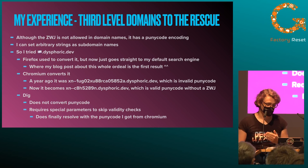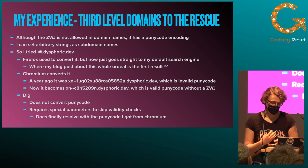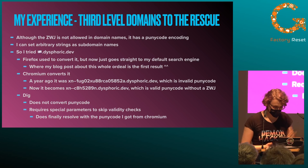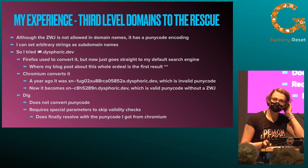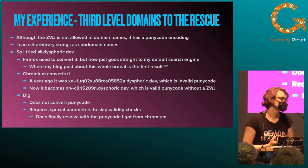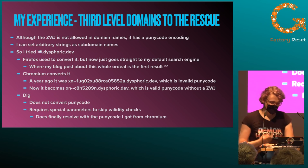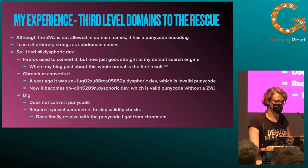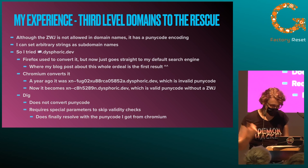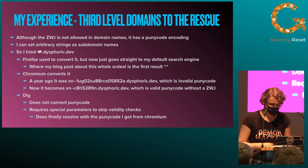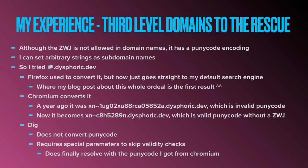The zero-width joiner was not allowed in domain names, but it has a punycode encoding, at least depending on which encoder you use. I can set arbitrary strings as subdomain names, so I tried setting one. Firefox did convert it back then and it worked, but now it just goes straight to the default search engine without even trying. Chromium does convert it — a year ago it was one unreadable string, now it's another. The first wasn't valid punycode; I don't know how that happened, but they fixed it. I tried dig, a DNS command-line tool — it doesn't convert punycode so I had to do it myself. It has validity checks you have to disable, but then it does work with the punycode copied from Chromium.